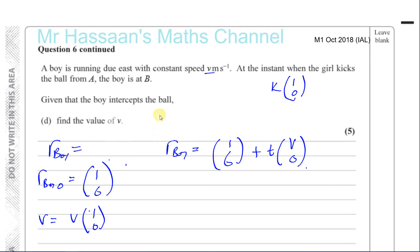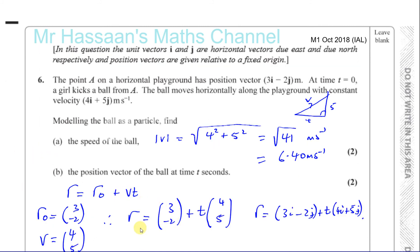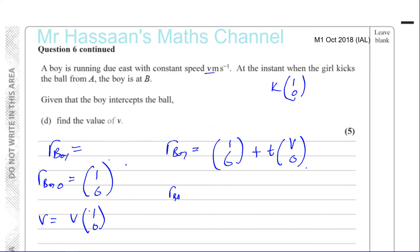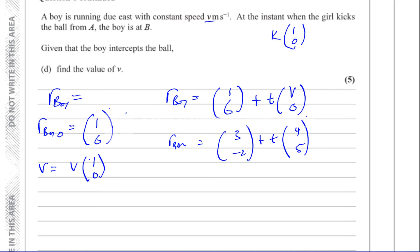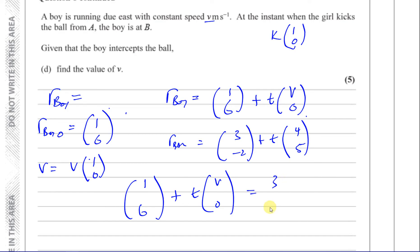Given that the boy intercepts the ball, the position vector of the boy and the position vector of the ball must be the same at that moment. The position vector of the ball is (3, minus 2) plus t times (4, 5). So setting them equal: (1, 6) plus T times (V, 0) equals (3, minus 2) plus T times (4, 5).